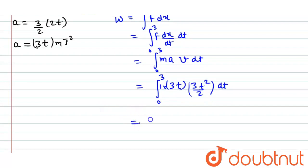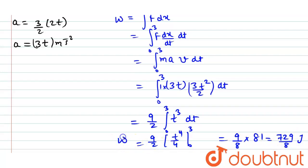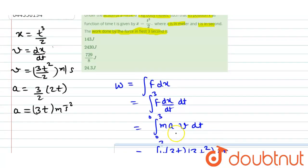So we can write it as (9/2) ∫t³ dt from 0 to 3 seconds. So it will be (9/2) × [t⁴/4] from 0 to 3. So it will be (9/8) × 81. So it will be 729/8 joules. This is the work done that we have to find out. And we can say that option number 3 is correct.